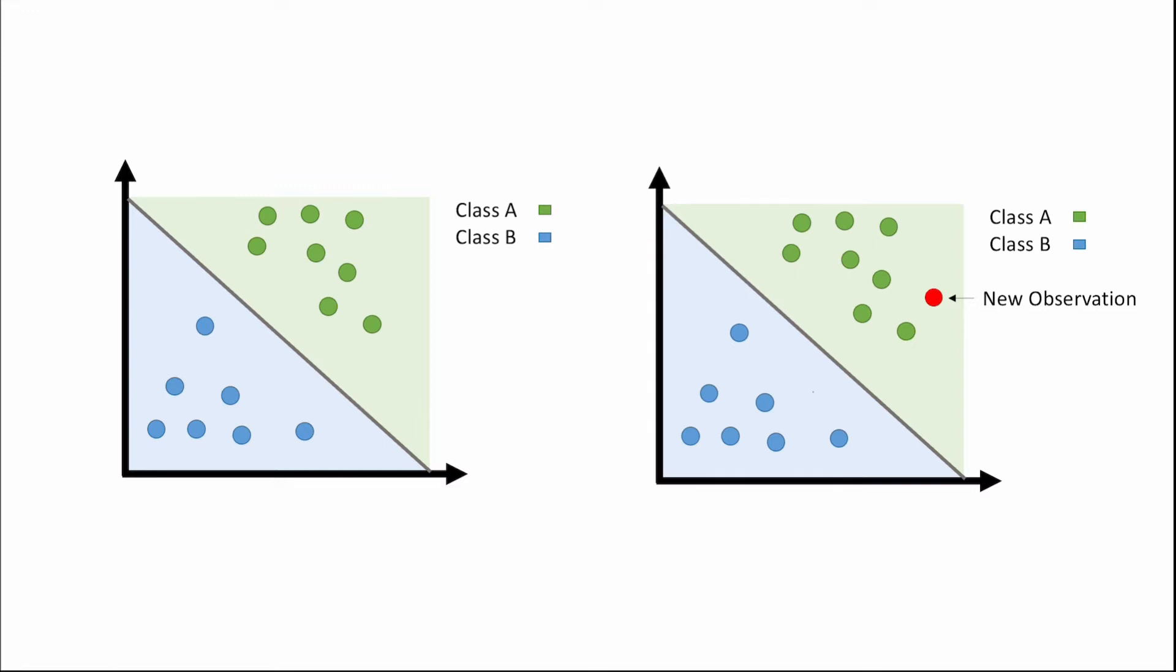So here the new observation lies above the hyperplane so we predict it belongs to class A, and if it were to lie below, so for example here, we would predict it belongs to class B.